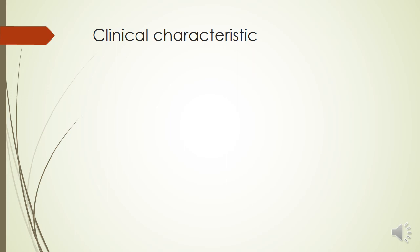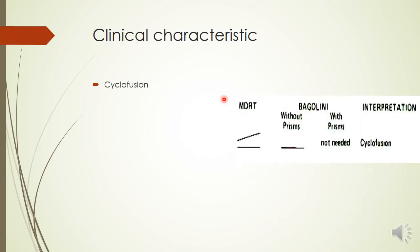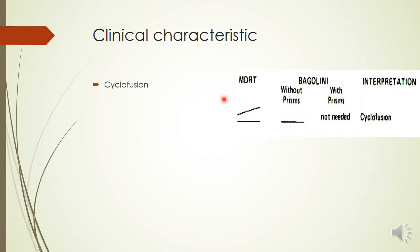Coming to the clinical characteristics, the first commonly seen feature is cyclofusion. When you perform a double Maddox rod test and break fusion, you find cyclophoria or cyclotropia is present. However, when similar stimuli are given to both eyes, the brain tries to superimpose and fuse the images using cyclofusion — similar to how convergence and divergence are used. The eye can intort and extort to fuse two different images into a single one.